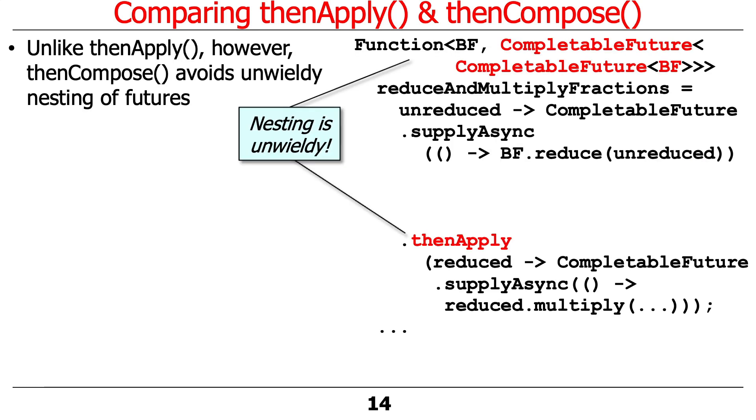Unlike thenApply, however, thenCompose avoids this unwieldy nesting of completable futures. So this is what things would look like if we used thenApply, and you can see very quickly it gets out of control. The use case is we're going to reduce a BigFraction asynchronously in the background, and when that's done, we're going to call thenApply, which is going to asynchronously multiply things in the background. The problem here is that thenApply will return a CompletableFuture to whatever we're doing, and supplyAsync also returns a CompletableFuture. So by using thenApply, we'd have to write this type of ugly verbose code that says we have a function with a BigFraction and a CompletableFuture to a CompletableFuture of BigFractions.